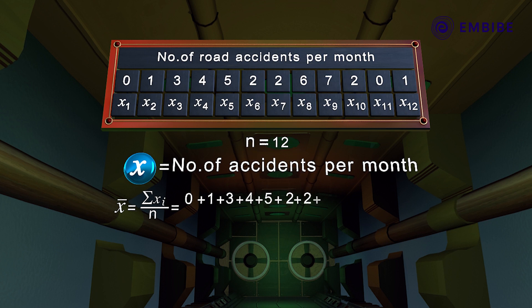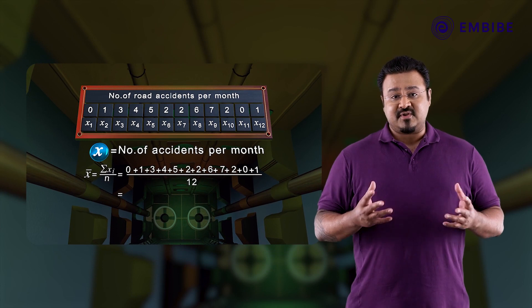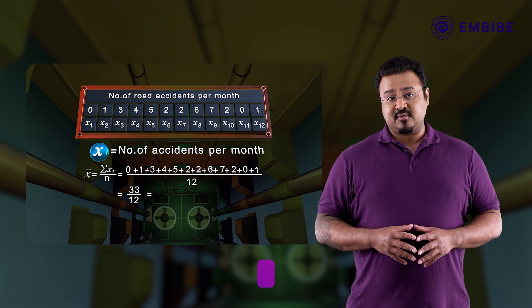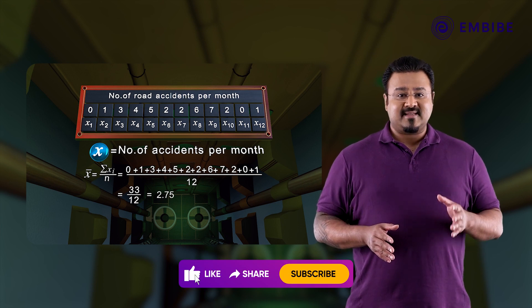2 + 6 + 7 + 2 + 0 + 1, all upon 12, which equals 33/12, which equals 2.75.